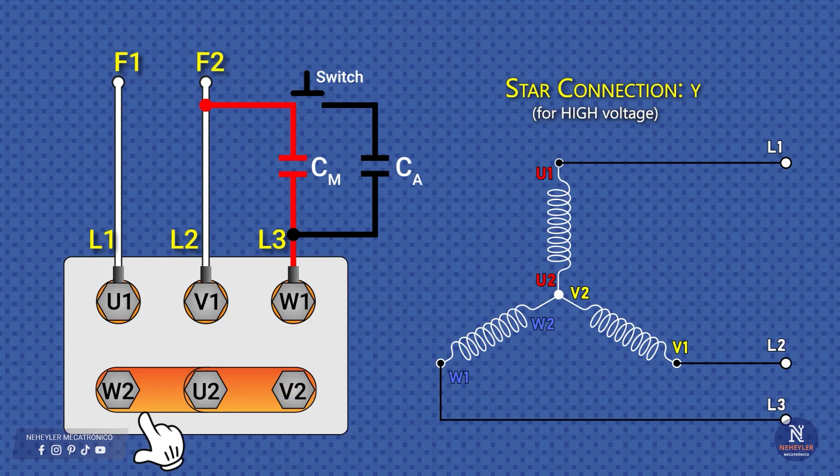In star connection, the terminals U2, V2, and W2 are joined together with metal plates, forming a common point. The supply is connected at U1, V1, and W1. Since in this case we only have two phases, the capacitors must be connected between one of the output points and one of the supply lines, as shown.